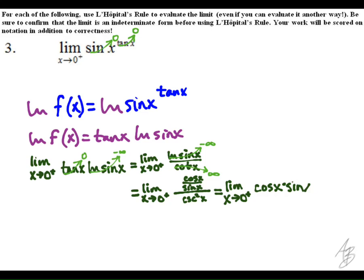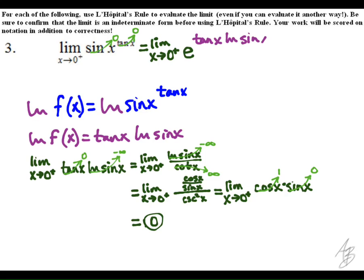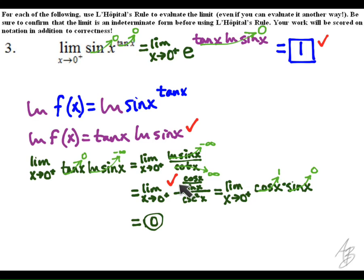With that indeterminate form we can use L'Hôpital's rule, and we get a quotient that simplifies to cosine of x times sine of x, which is one times zero, or zero. This is what we get when we allow x to approach zero from the right. We rewrite the original limit as e to the tangent of x times natural log of sine of x — since exponential and natural log functions are inverses, the exponent evaluates to zero, giving us e to the zero, which is one. Points were given for the final answer, for rewriting the function as tangent of x times natural log of sine of x, and for the use of L'Hôpital's rule.